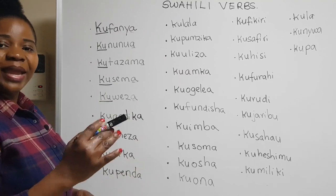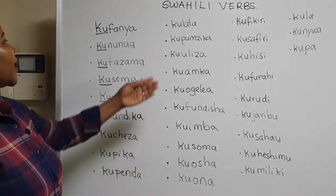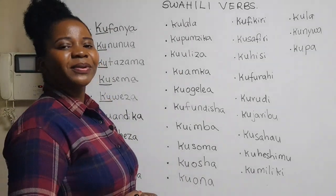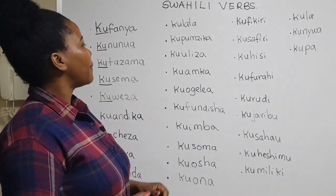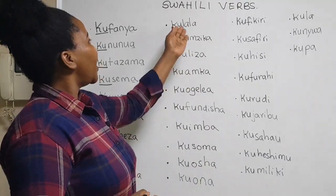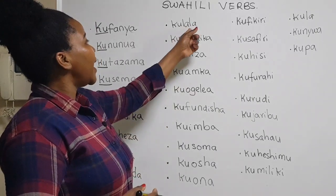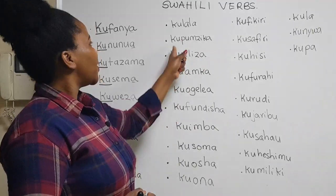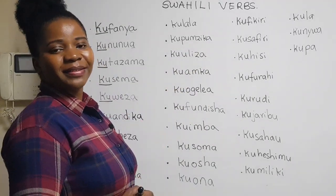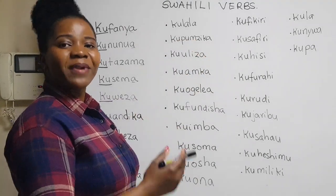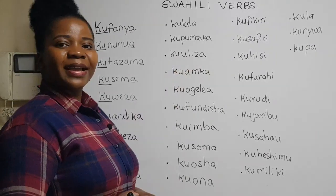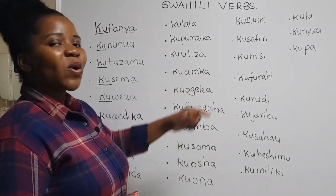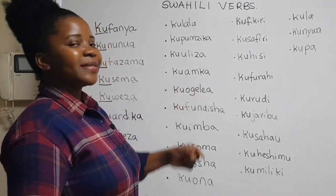'Kupika' is 'to cook' and 'pika' is 'cook.' 'Kupenda' is 'to like' or 'to love' and 'penda' is 'like' or 'love.' 'Kulala' is 'to sleep' and 'lala' is 'sleep.' 'Kupumzika' is 'to rest.' 'Kuuliza' is 'to ask' and 'uliza' is 'ask.'